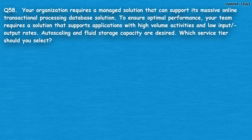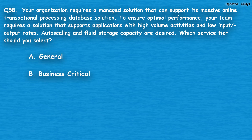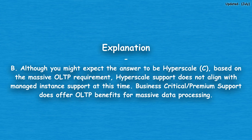Question number 58: Your organization requires a managed solution for a massive online transactional processing (OLTP) database. Your team requires a solution that supports high-volume activities and low I/O rates, with auto-scaling and fluid storage capacity. Which service tier should you select? Option A: General, option B: Business Critical, option C: Hyperscale, option D: Free. The correct answer is option B, Business Critical. Although Hyperscale might seem expected, it does not align with managed instance support for OLTP at this time. Business Critical does offer OLTP benefits for massive data processing.